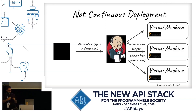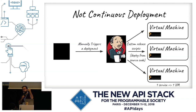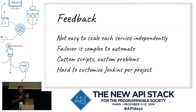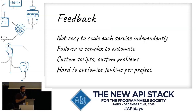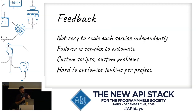The feedback from this first pattern was that it's really not easy to scale each service independently because we were using virtual machines. Spawning a new instance meant spawning a new VM, automatically provisioned with Puppet, then deploying the application — quite slow. Failover was complex to automate. When a service instance failed, we just destroyed the VM and created a new one. We also used custom scripts, which involved custom problems — a lot of scripting, custom stuff, really hard to maintain.